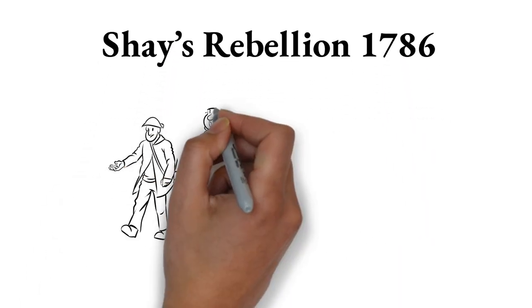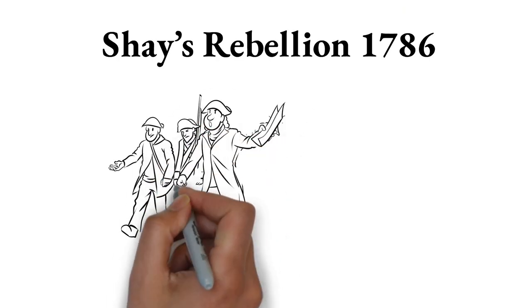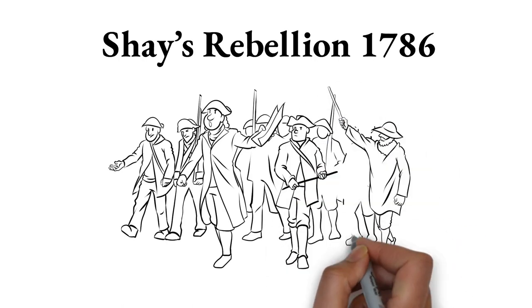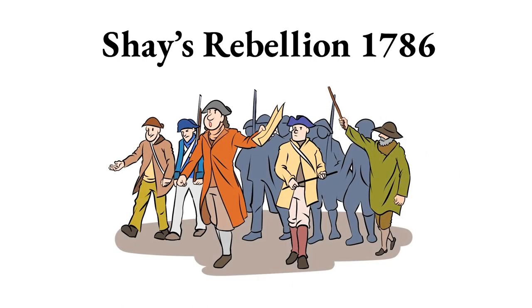In 1786, Revolutionary War veteran Daniel Shays led an armed protest against oppressive taxes. The Articles of Confederation left the federal government powerless against the rebellion, which was suppressed by state militias.